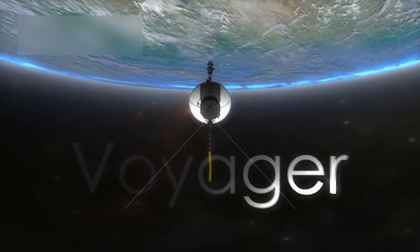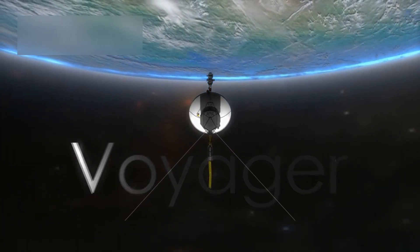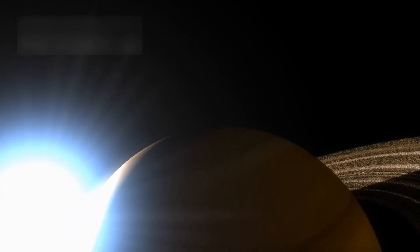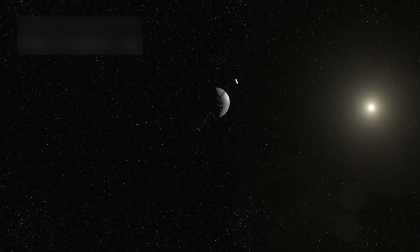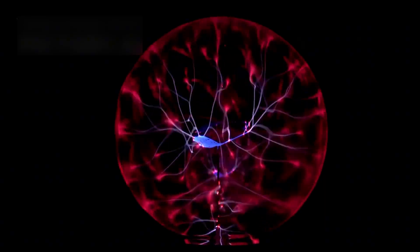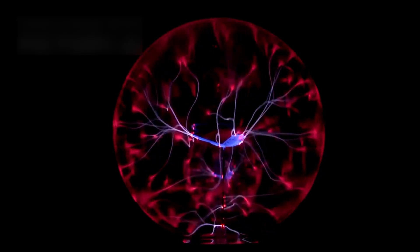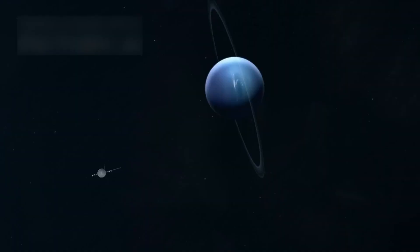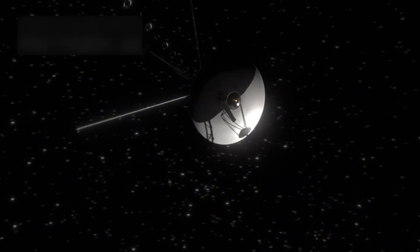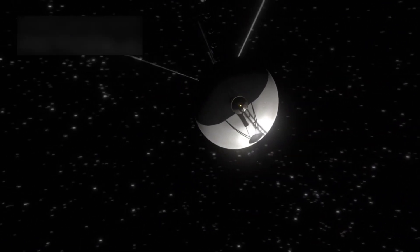Voyager 1 reminds us of what's possible when we dare to ask the big questions and build the tools to chase the answers. Its journey is still unfolding, and so are the mysteries it uncovers. From strange plasma behavior to the possibility of alien signals, every detail matters. What lies ahead in Voyager 1's path? Possibly new regions of interstellar space, even denser clouds of particles, or unexplored magnetic zones that could hold answers to age-old questions.